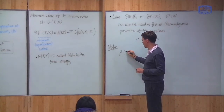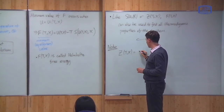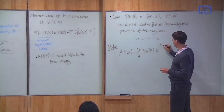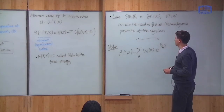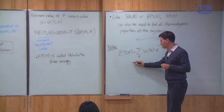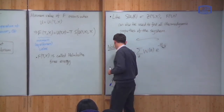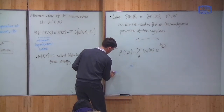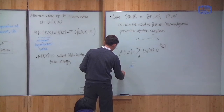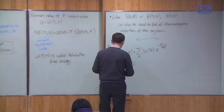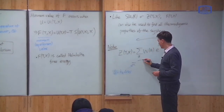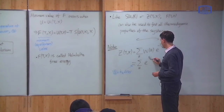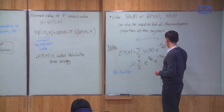What is Z? Z(T, X) is, by definition, the sum over U of W(U) times e^(-U / k_B T). Next, I can use the definition of entropy, namely that S = k_B ln W, so therefore W = e^(S / k_B). So this becomes the sum over U of e^(S / k_B) times e^(-U / k_B T).